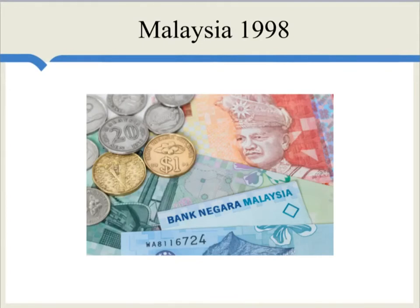Another positive example cited by advocates of capital controls has been the case of Malaysia in 1998 during the Asian financial crisis. Whereas some other economies such as South Korea, Indonesia, and Thailand were experiencing serious problems from rapid movements of capital out of their countries, Malaysia in 1998 did impose some capital controls, and it is argued that this slowed down their process of having financial troubles.